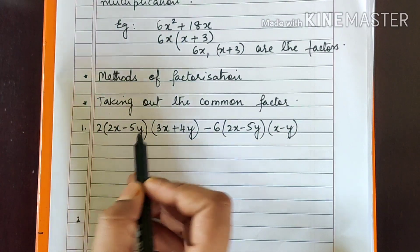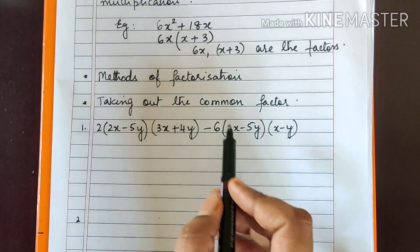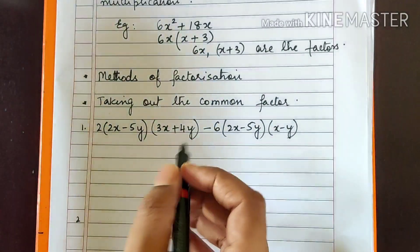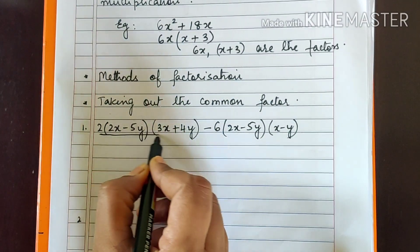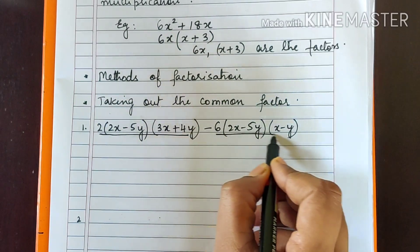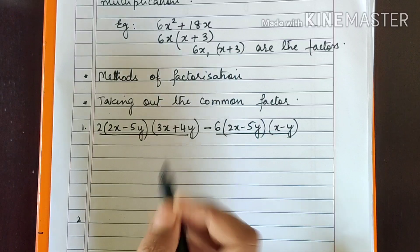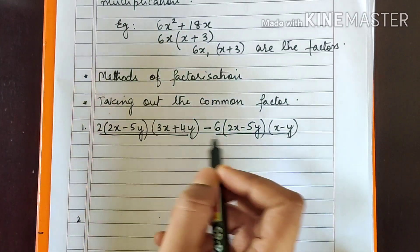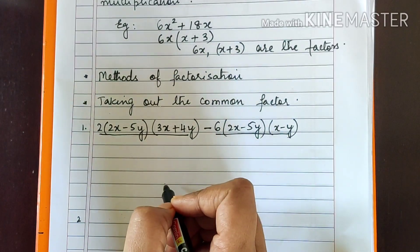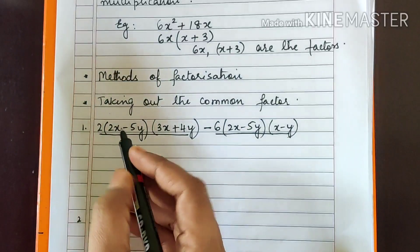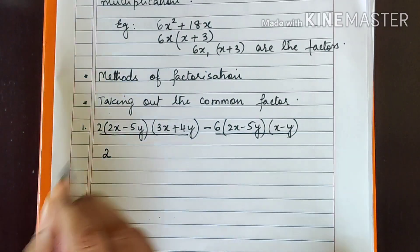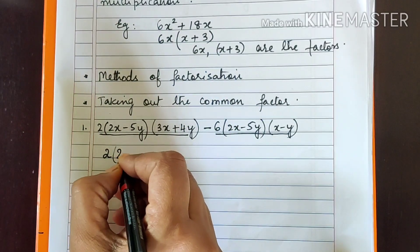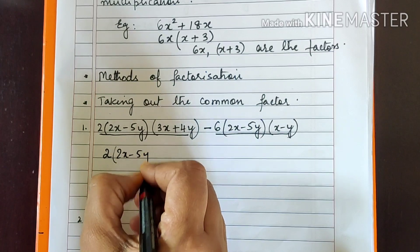The first example: 2(2x - 5y)(3x + 4y) - 6(2x - 5y)(x - y). If you observe this expression, there are two terms — terms are generally separated by plus or minus sign. From these two terms, first we will take out the common factor. Among 2 and 6, the common factor is 2. And you also have (2x - 5y) appearing in both terms, so take that out too.